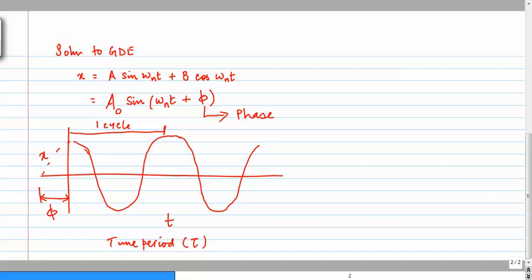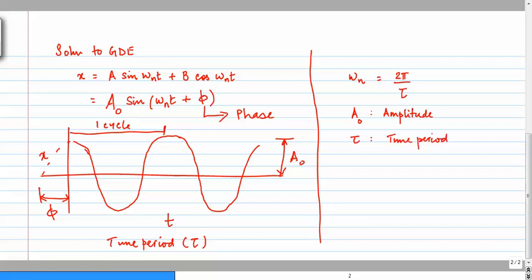So, we have a relationship between time period and the natural frequency that is given by my ωₙ is equal to 2π over my time period τ. If I look in the x axis, the peak value of my x that I am obtaining in my vibration is my amplitude A₀. So, the key parameters that the solution gives me is what is the amplitude of my vibration? What is the time period of my vibration? What is the phase or phase lag of my vibration? And finally, what is the natural frequency of my vibration?